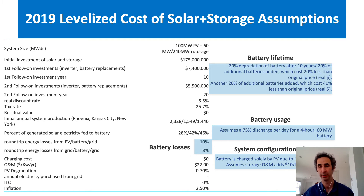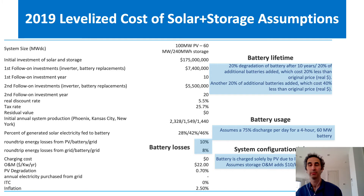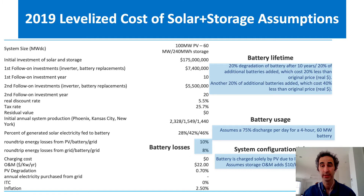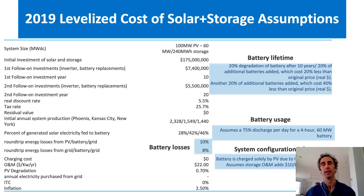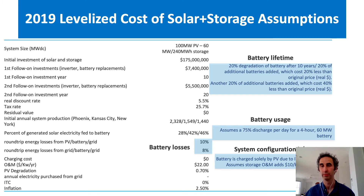Next, we have system configuration. We're assuming that the system is designed and operated such that all of the electricity that the battery uses comes from the PV system. This is done because in order for the battery cost to qualify for investment tax credit, the vast majority of electricity must come from the PV system, and therefore we just assume that all of it does.